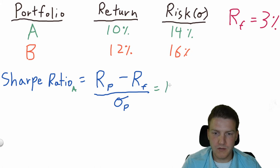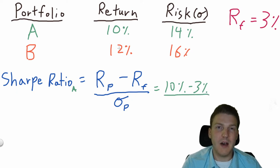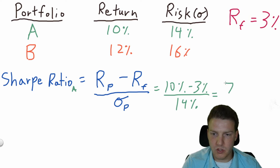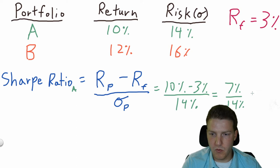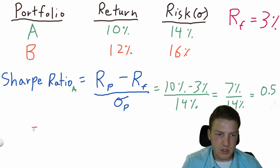Starting with Portfolio A, we take the expected return of 10% and subtract the risk-free rate of 3%, then divide by the total risk of 14%. That gives us an excess return of 7% divided by the total risk of 14%, resulting in a Sharpe ratio value of 0.5.